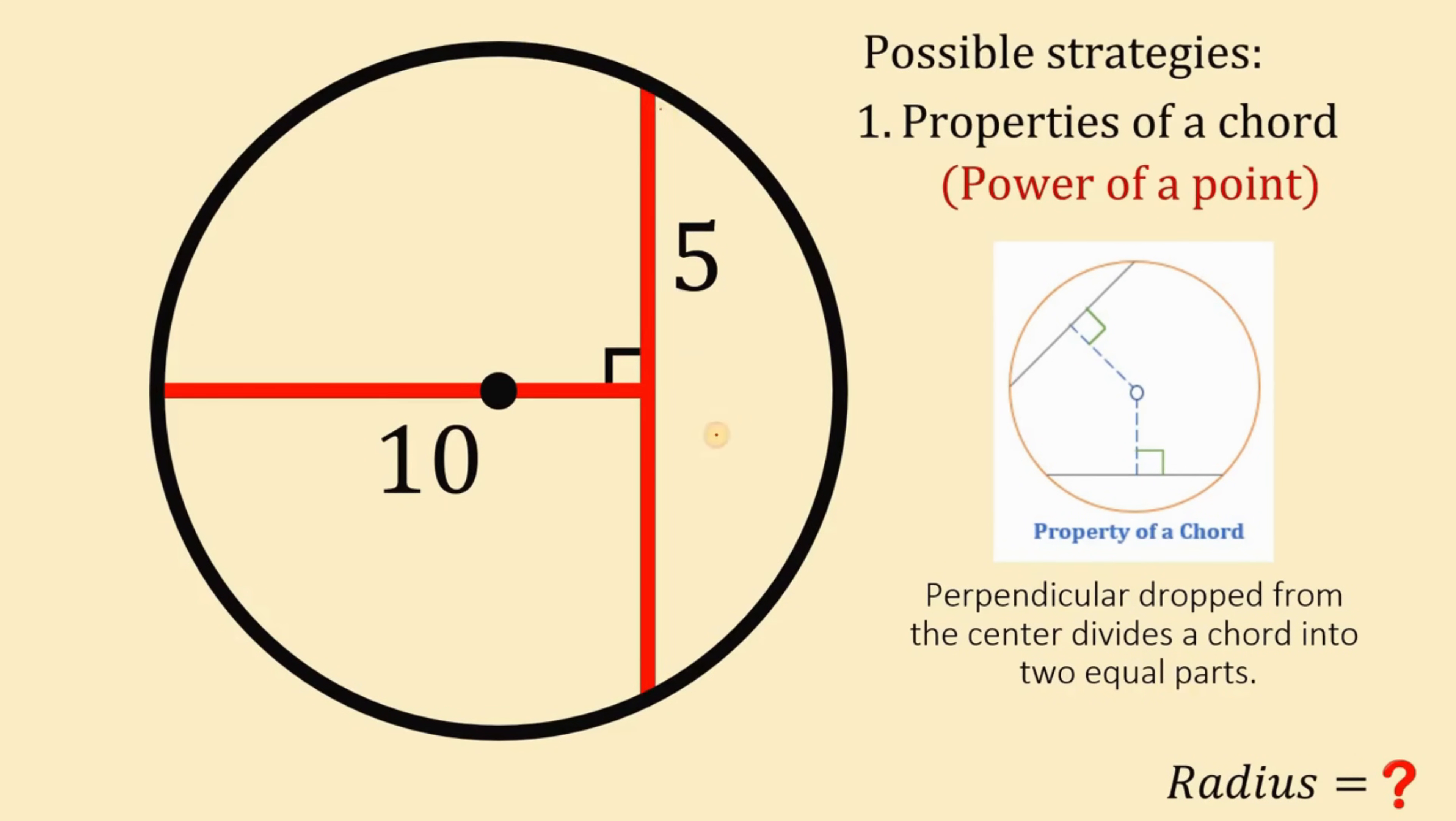Now we have here a chord. Now we drop a perpendicular line from the center. Therefore, it's said to be that this chord divides into two equal parts. Now we know the half, half is 5, therefore the other half is also 5.